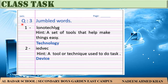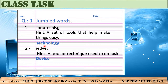Question number three: Jumble words. پیارے بچوں، jumble words یعنی بے ترتیب الفاظ۔ Number one — jumble word: L O N O T E C H L Y G. Hint: a set of tools that help make things easy — یعنی tools کا ایک set جو چیزوں کو آسان بناتا ہے۔ Answer: Technology. Number two — jumble word: I E D V C E. Hint: a tool or technique used to do a task. Answer: Device.